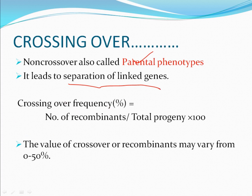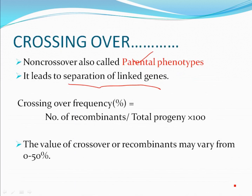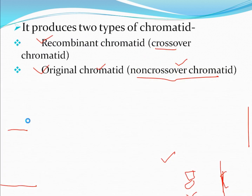Now coming to crossing over frequency. What is crossing over frequency? The recombinant is the product of crossing over, so the total number of recombinants divided by the total progeny — both recombinant and parental — multiplied by 100. This is called the crossing over frequency.